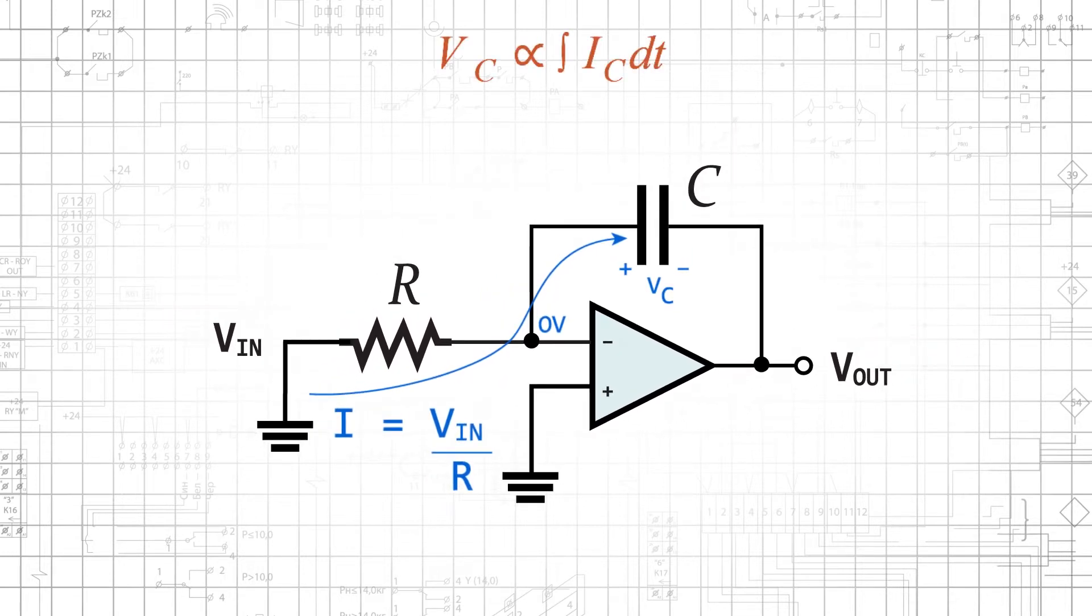The voltage as a function of time across a capacitor is proportional to the integral with respect to time of the current through the capacitor. Since one of the capacitor's terminals is connected to ground through the virtual short, the magnitude of the output voltage will be equal to the magnitude of the voltage across the capacitor.